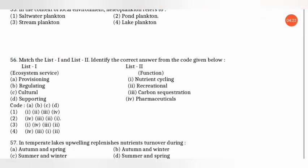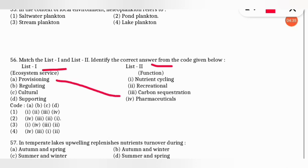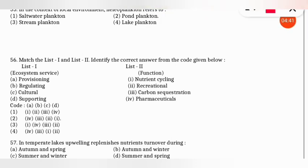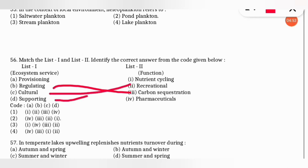The next match-the-following matches ecosystem services with their functions: provisioning service → pharmaceuticals (medicines from ecosystem); regulating service → carbon sequestration; cultural service → recreational; supporting service → nutrient cycling. The correct option is option 2.